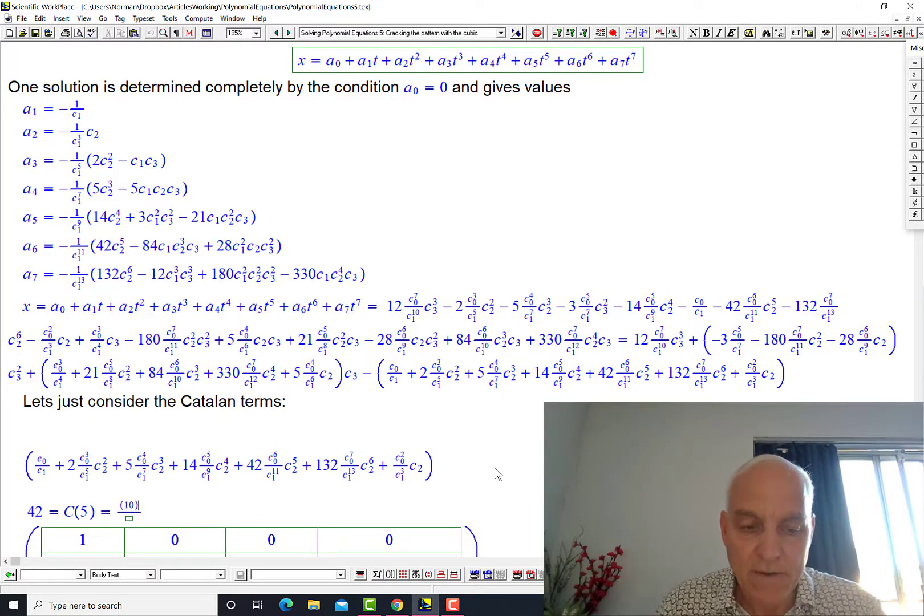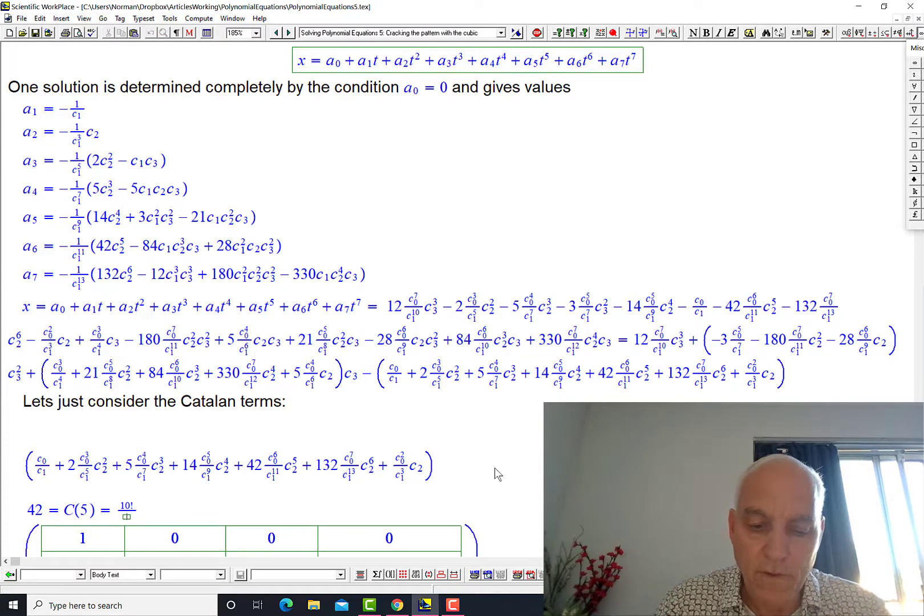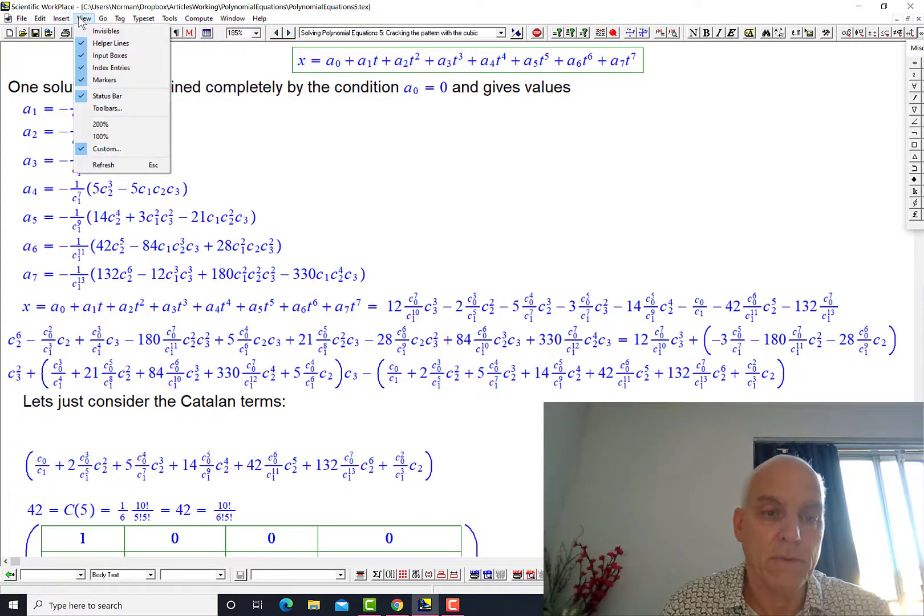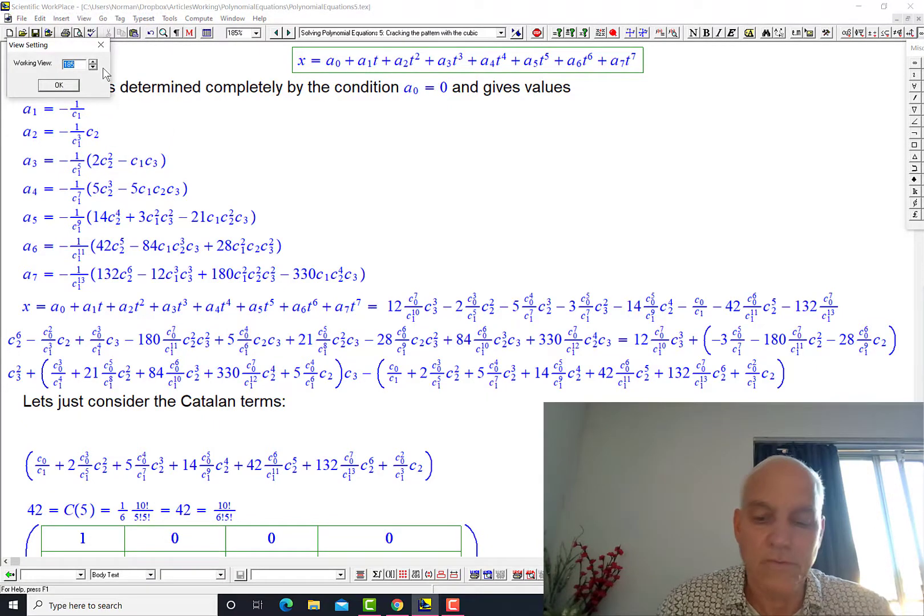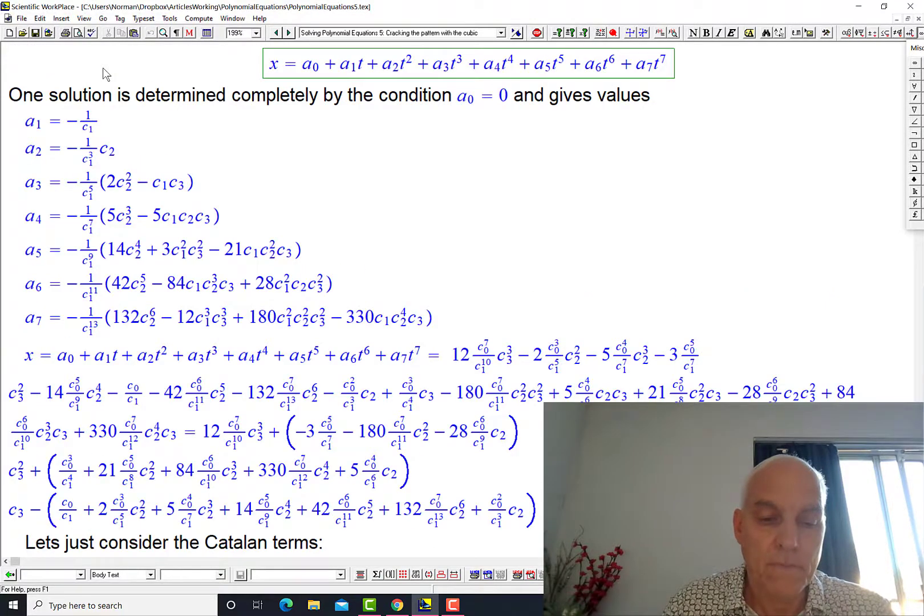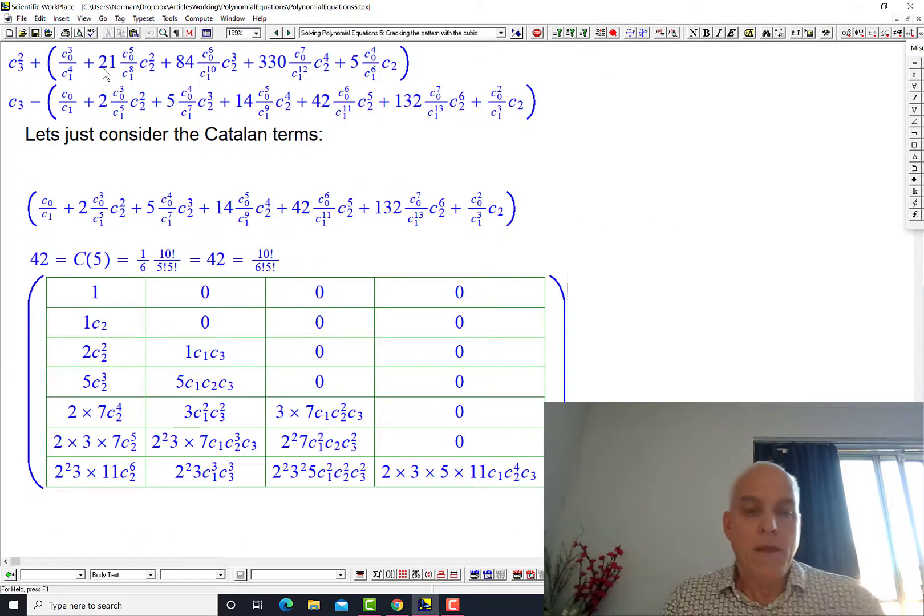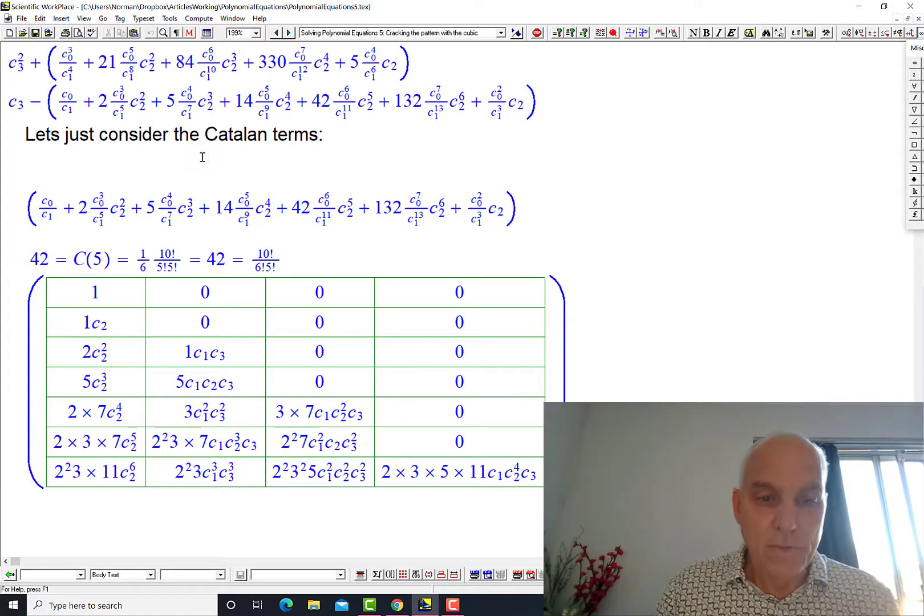2 times 5, so that's 10 factorial over 5 factorial times 5 factorial. That's the central binomial coefficient. And then 1 over 6 times that. Let me just check that that's equal. Yes, that's correct. So another way of saying what this is, I'm going to rewrite this just a little bit. It's equal to, instead of the 6 times 5 factorial, I'll just make it a 6 factorial and get rid of this 1/6.